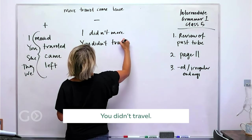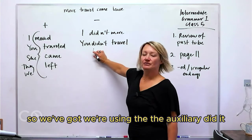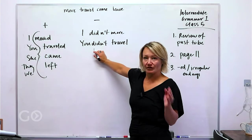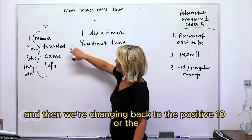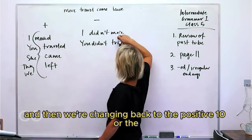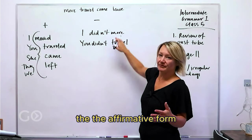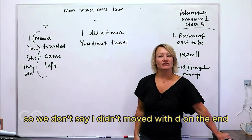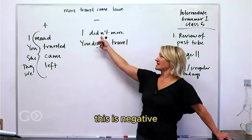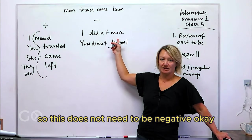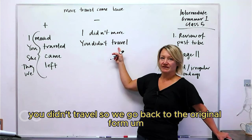If we're going to make it negative, we're going to say I didn't move, you didn't travel. Now what's happening here? We've got the auxiliary did—well, do, but do in the past tense is did—and then we're changing back to the positive tense, the affirmative form, the base form of it. So we don't say I didn't moved with d on the end. This is negative, so this does not need to be negative.